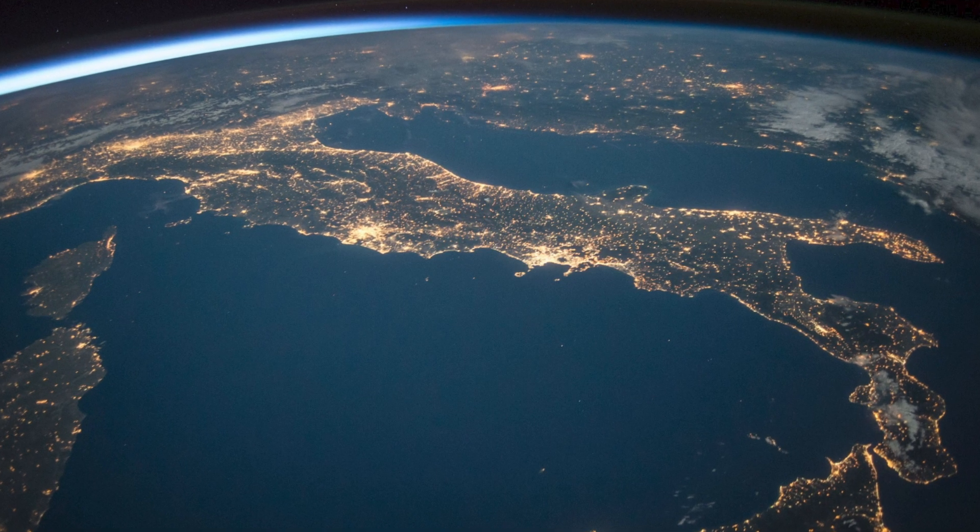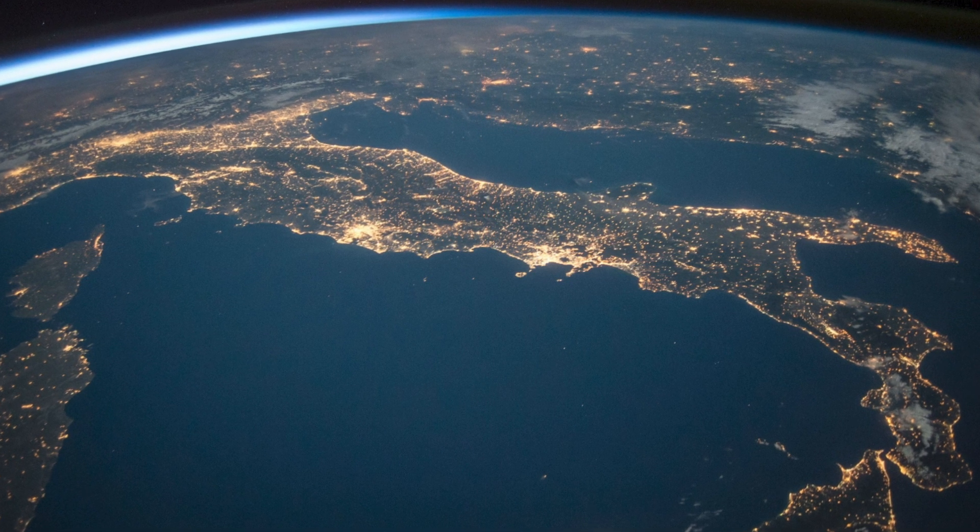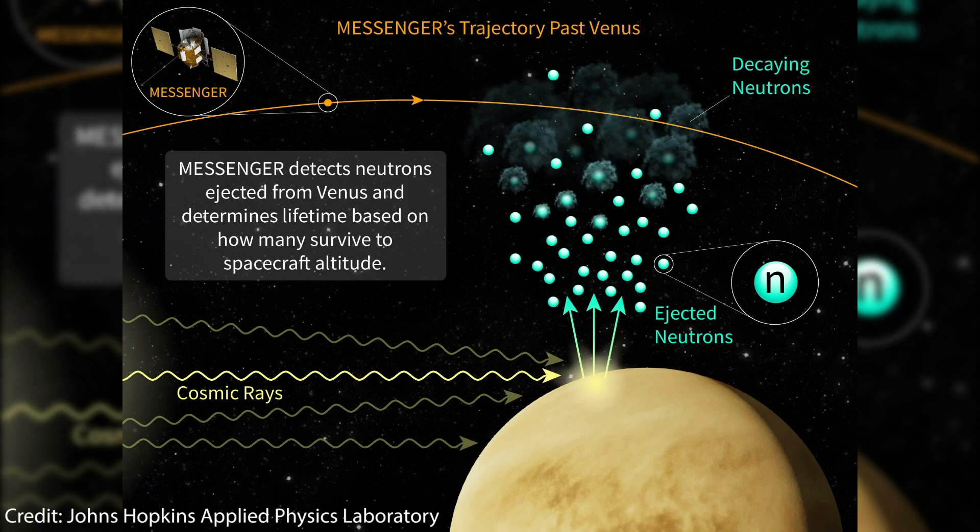There is a relatively new alternative method that is still in its infancy: the space method. This method relies on the fact that most planetary bodies eject neutrons when hit by cosmic rays.